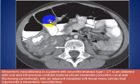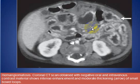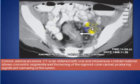Here is another patient with mesenteric neurofibroma. And here is a patient with a CT scan after oral and IV contrast due to hemangiomatosis.